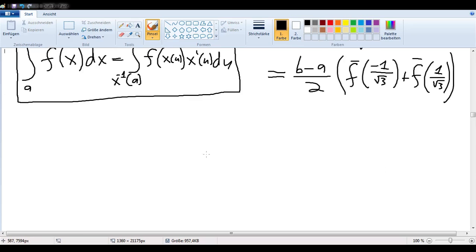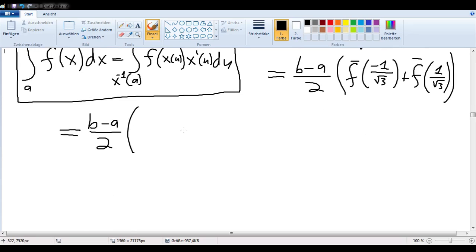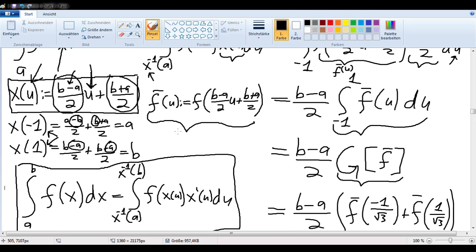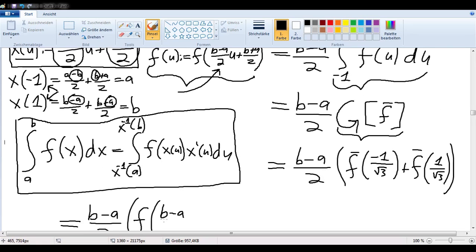Now we can continue to sub in. We have (b minus a) over 2. And now we want to sub back into this definition for f bar. That just means f of (b minus a) over 2 times u plus (b plus a) over 2, right?